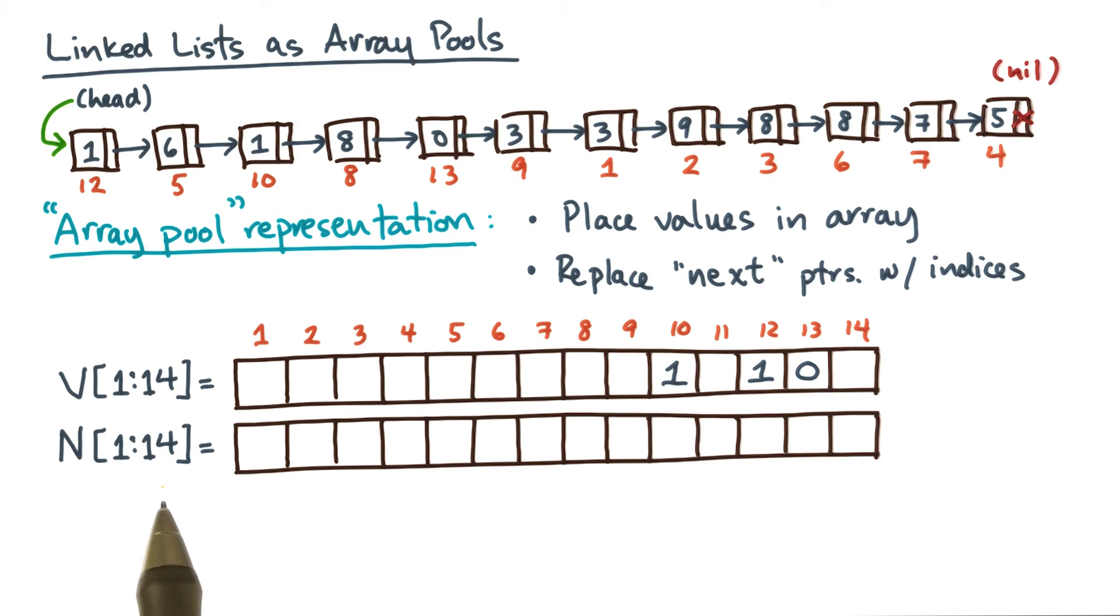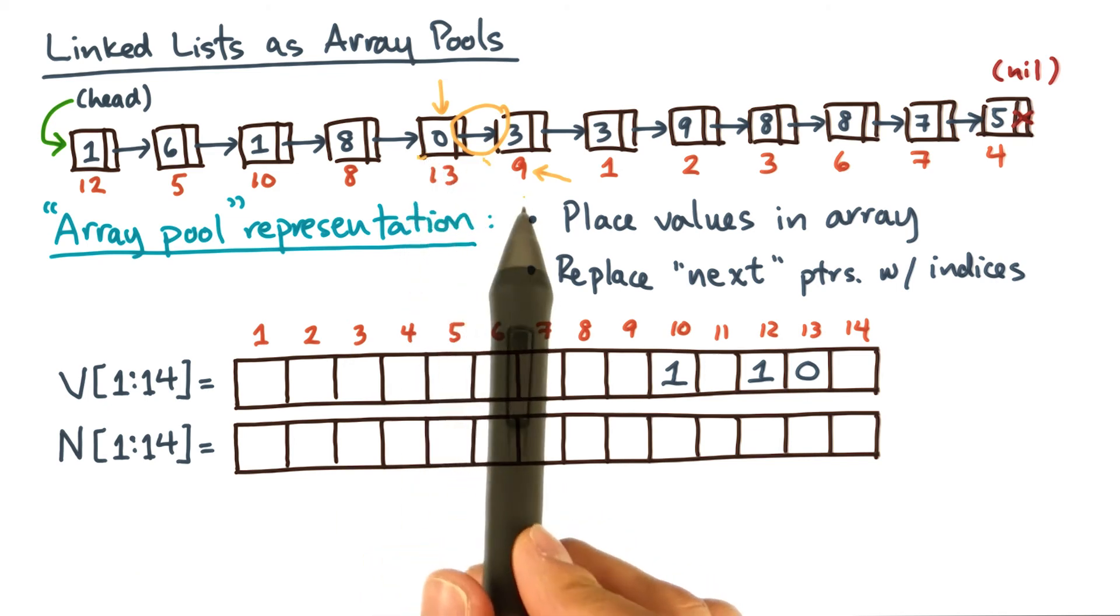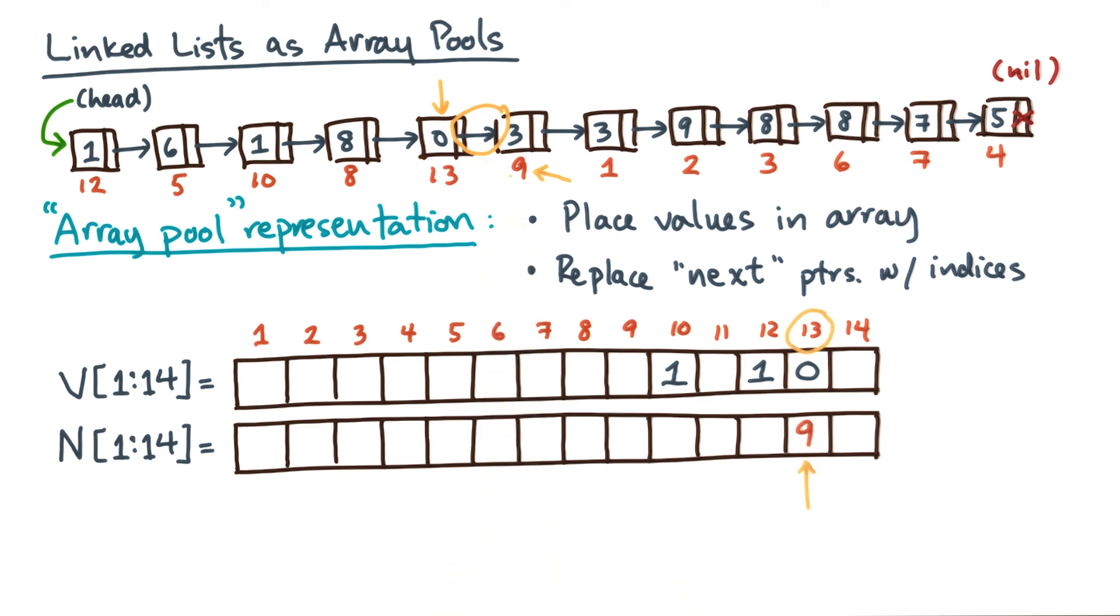Now, although I'm calling these pointers, what I'll put there is not a memory address, but rather the index of the node. For example, look at this node. It points to the node whose position is 9, so its next pointer should also be 9.